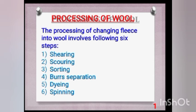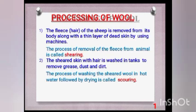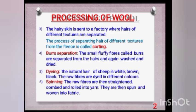The processing of wool to obtain fiber from animal hairs involves many steps: shearing, scouring, sorting, carding, dyeing, and spinning. Shearing is the process in which hairs are cut from the animals. In scouring, the sheared hairs — which contain dirt — are washed in detergents to remove the dirt.